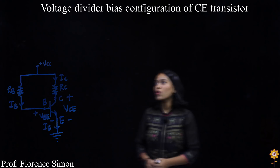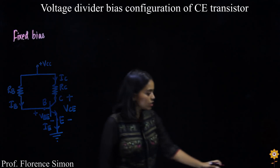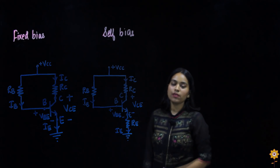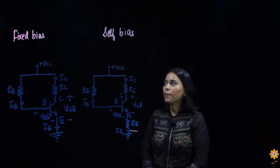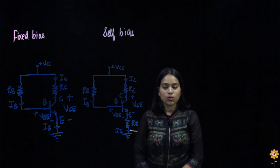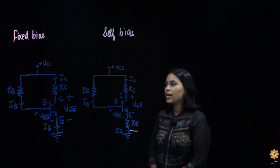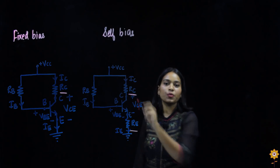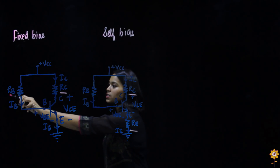This is the circuit diagram for fixed bias configuration and this is the diagram for self bias configuration. If you look at both diagrams you can see there is only one difference: resistor RE, which is present in self bias configuration but not in fixed bias configuration. When we started studying biasing techniques, I mentioned that the resistor in the collector terminal is present in all configurations. You can see that in fixed bias, resistor RC is present in the collector terminal, and in self bias also RC is present in the collector terminal. In fixed bias we had resistor RB.